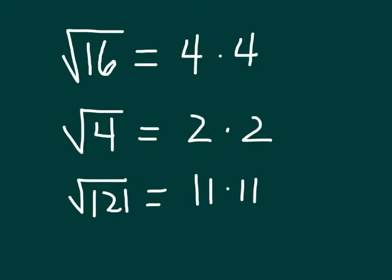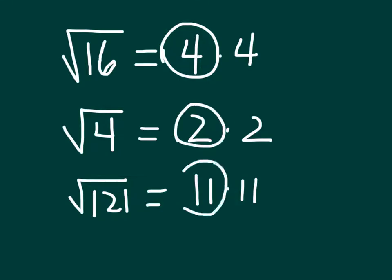So the square root of 16 is 4, the square root of 4 is 2, and the square root of 121 is 11.